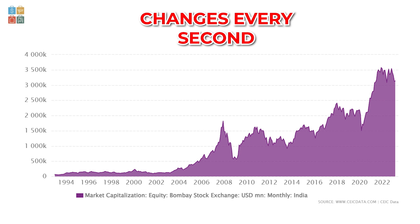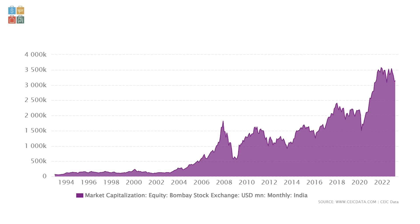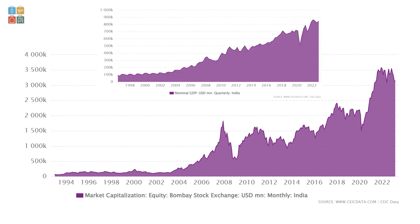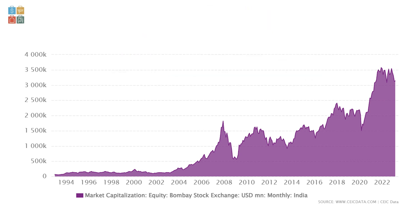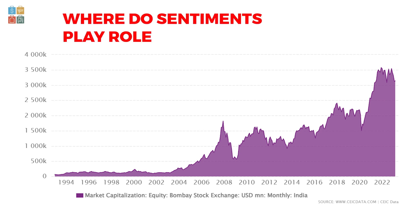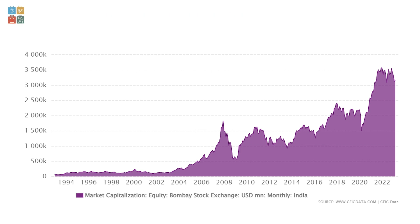Just like the GDP chart, you will also see in this market cap chart that in 2008, when there was a credit crisis, there was a very deep cut, and during the COVID crisis in 2020 there was also a deep cut. So what do both charts tell you? The GDP trajectory and dips mirror the stock market capitalization trajectory and dips. I hope this gives you some clarity that fundamentals of a business drive stock prices. Now let's take a look at where sentiments play a role.